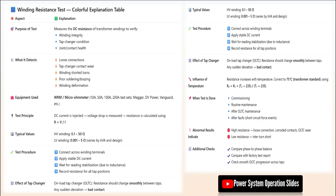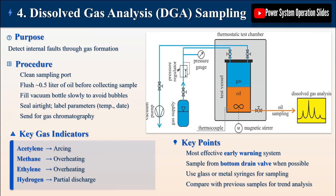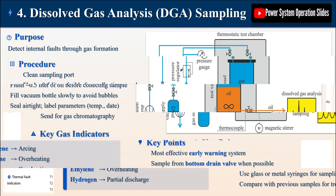Test voltages are typically 1 kV for LV windings and 5 kV for HV windings. Measurements are taken for HV-earth, LV-earth, and HV-LV connections, with readings held for either 1 minute (dielectric absorption ratio) or 10 minutes (polarization index). The pass criteria include a polarization index greater than 2 indicating good insulation, while readings below 100 MΩ suggest moisture contamination or insulation deterioration that requires attention.